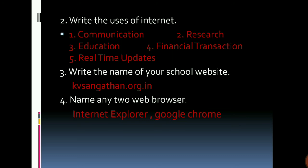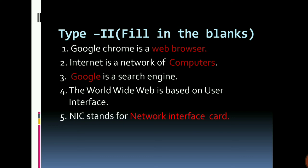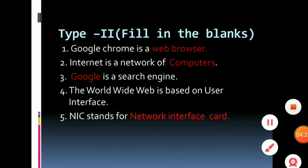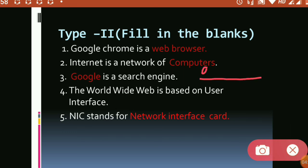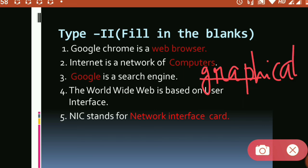Write the name of your school website: kvsangathan.org.in. Name any two web browsers: Internet Explorer and Google Chrome. Fill in the blanks: Google Chrome is a web browser; internet is a network of computers; Google is a search engine; the World Wide Web is based on a graphical user interface (GUI); NIC stands for Network Interface Card.